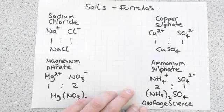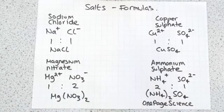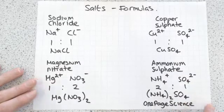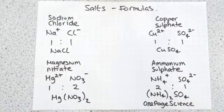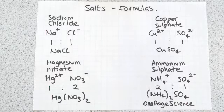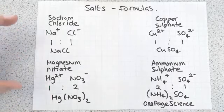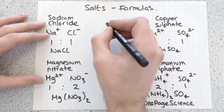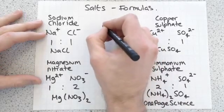So four examples there of how you work out the formula for a salt. Here's one for you guys to have a go at. I'm going to write in the middle, if you press pause when I draw a pause symbol you can have a go at doing one. Let's take copper nitrate.